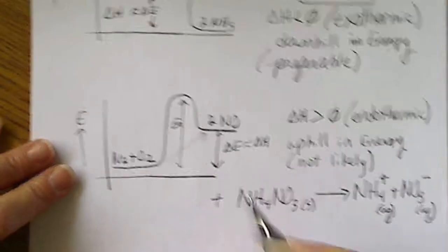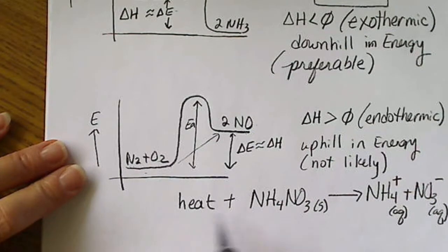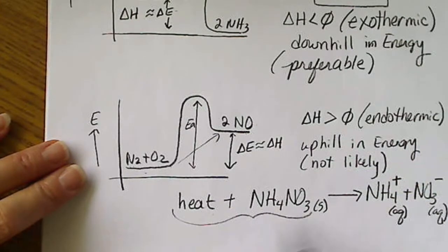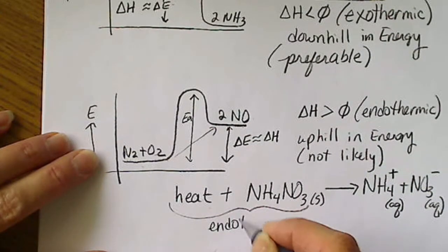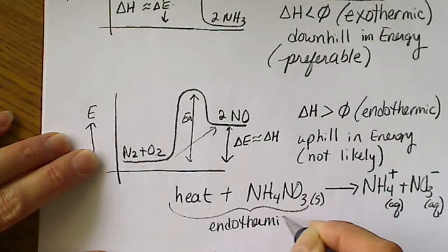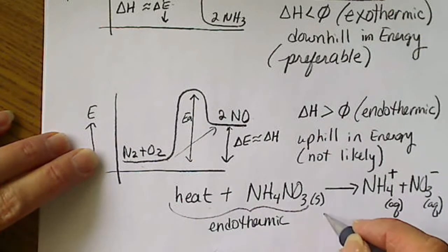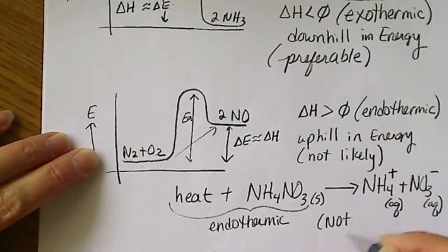So an endothermic reaction means the heat has to be absorbed from the surroundings. So if heat is on the reactant side of a chemical equation, this is what we mean by endothermic. Again, this type of reaction is not common.